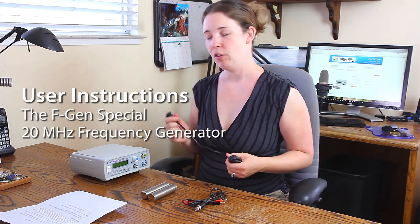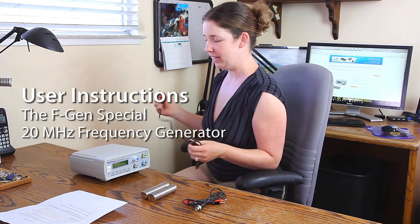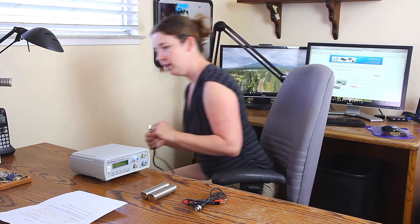This is the FGen Special. First you'll plug the AC cord into the unit and into the wall outlet.